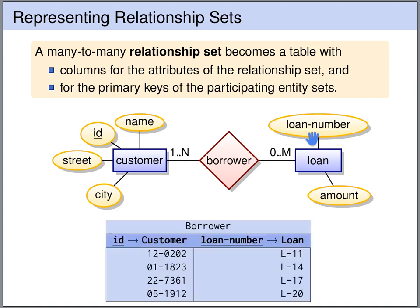So we get a table borrower that has a foreign key id referencing the customer table, and a foreign key loan number referencing the loan table.